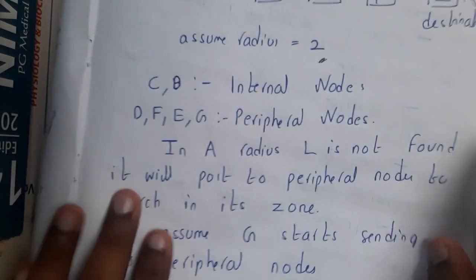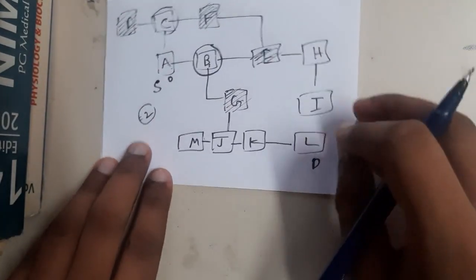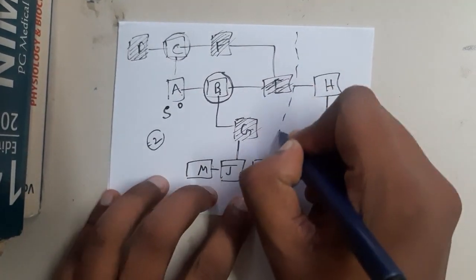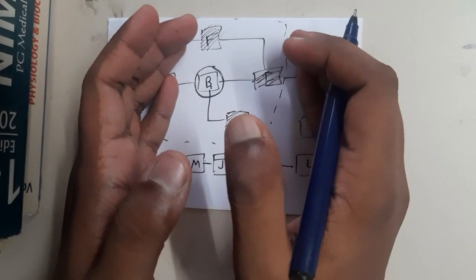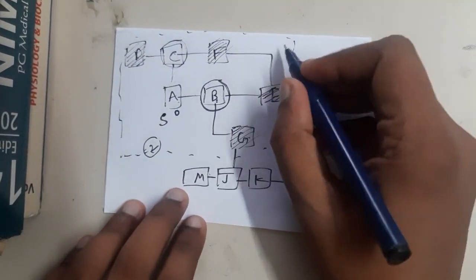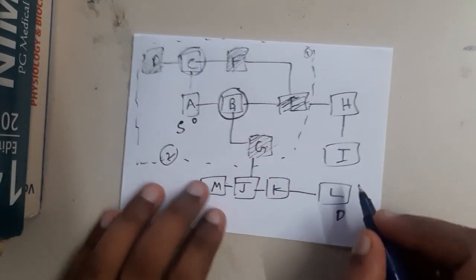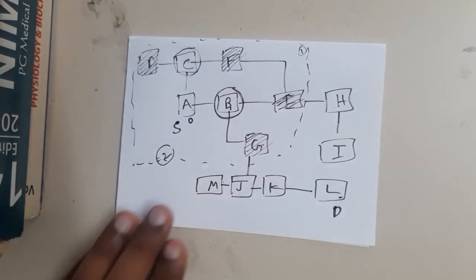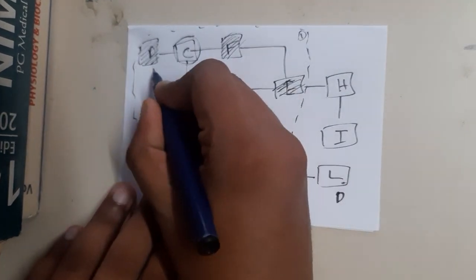So internal nodes, peripheral nodes, and their names are clearly defined. You want to send data from A to L. This particular zone, defined by the radius, is our first zone. By observation, L is not inside A's zone, so A knows it's searching in the wrong place. It then asks its peripheral nodes — the coordinators — which are those far from A, to search in their radius.